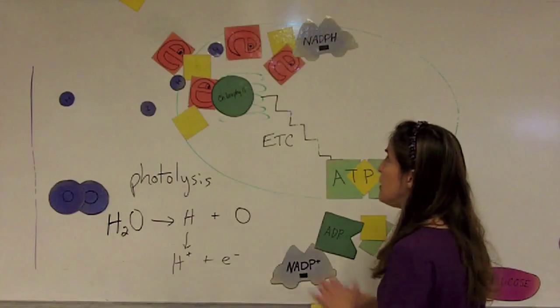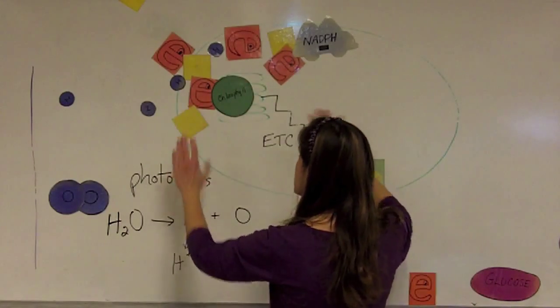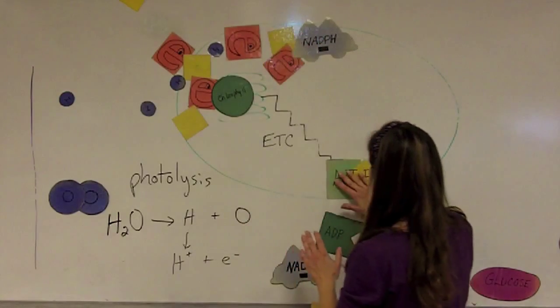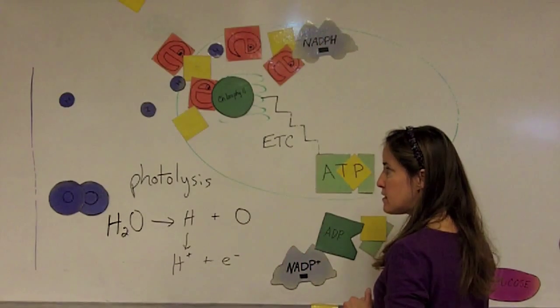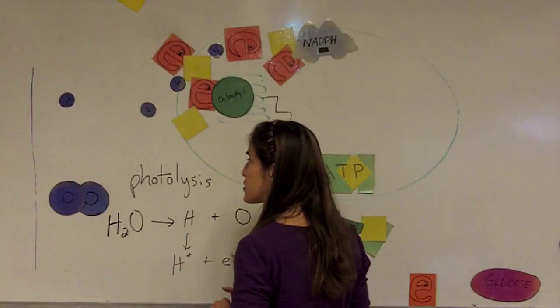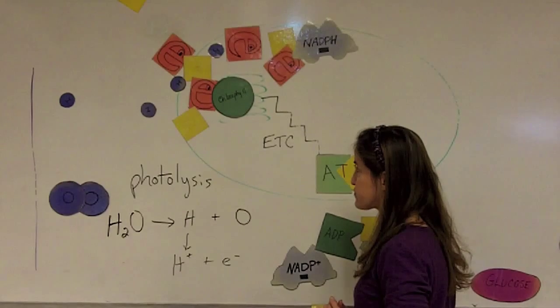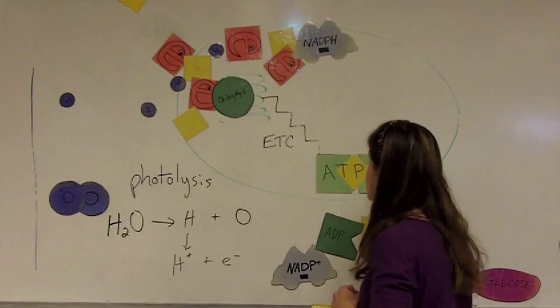So keep track of where we are. We've done the light-dependent reactions. We've used energy from sunlight to charge our carriers NADPH and ATP to get a supply of hydrogen and electrons. We broke up water molecules in the process of photolysis. That's actually the harder part of the two.